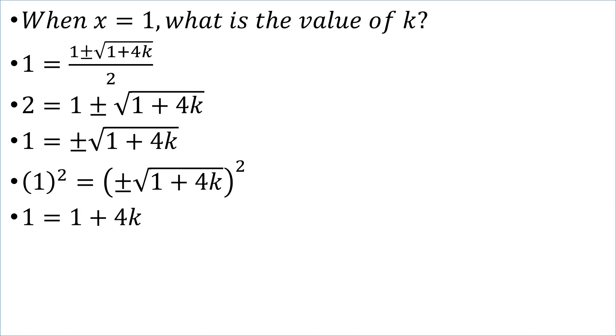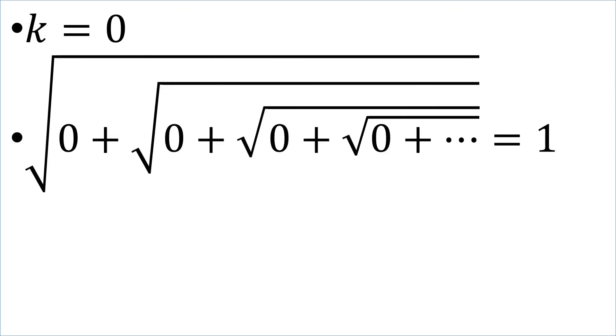So, transposing the 1, we subtract and get 0. Transposing the 4 and dividing, we get that k is equal to 0. Which gives us the astonishing result that the square root of 0 plus the square root of 0 plus the square root of 0 infinitely is equal to 1. How can an infinite square roots of zeros add up to 1?